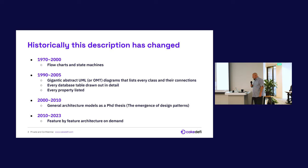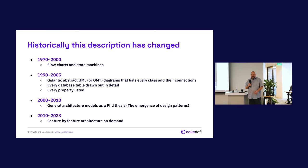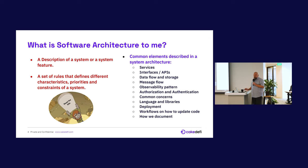From 2000 to 2010, general architecture as models started to appear, often as PhD theses from people who never worked in software development — they did their master's degree, then their PhD and invented a new way of architecting, and nothing happened to about 98% of this. Where we are today is usually feature-by-feature architecture on demand, and we have some general description of a system. I simplify it and say it's a description of a system or system feature, or a set of rules that defines different characteristics, priorities and constraints of a system.